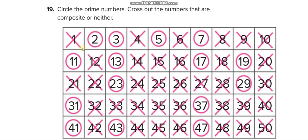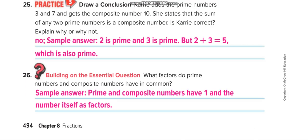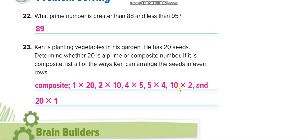Neither means the number one — cross it out. The circled ones are primes and the remaining are composite. Write a prime number greater than 50: the answer is 53. Write a composite number greater than 72. What prime number is greater than 88 and less than 95? The answer is 89. For 20 seeds — into how many ways can you plant them? Find the factor pairs of 20. It is a composite number because it has more than one factor pair.